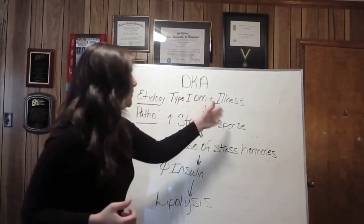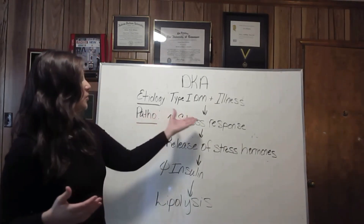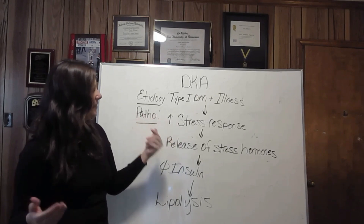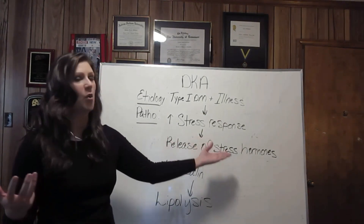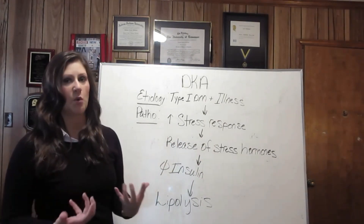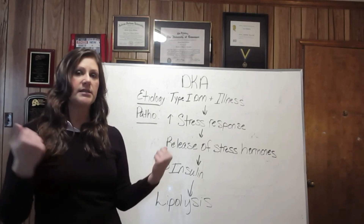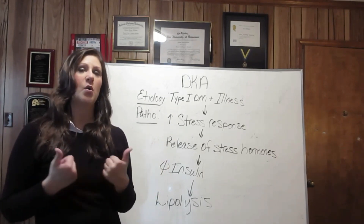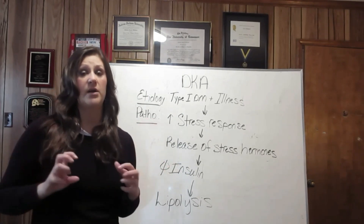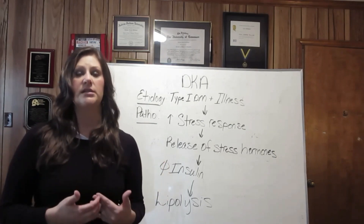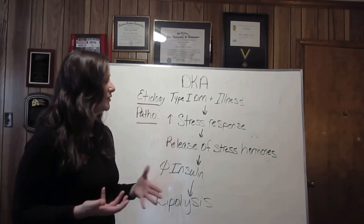Our type 1 diabetics get some sort of stress — 9 times out of 10 it is an illness. In my nearly 13-year career as a nurse, patients come in and it started out as a stomach virus or the flu, and next thing they know, they're in DKA. Any type of stress situation causes the stress response. With the stress response comes the release of stress hormones: cortisol, epinephrine, and norepinephrine. Cortisol is in direct opposition to insulin — cortisol raises blood glucose. Epi and norepi are fight-or-flight hormones. They are also in opposition to insulin and also increase blood glucose.